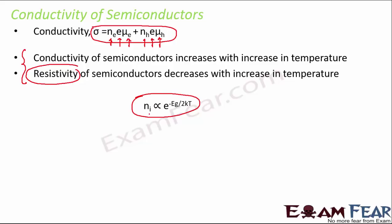The relationship is: n_i ∝ e^(−E_g / 2kT), where n_i is the number of electron-hole pairs generated, E_g is the energy gap, k is the Boltzmann constant, and T is the temperature. The number of electron-hole pairs determines the conductivity, and the charge carrier density increases exponentially with increase in temperature.